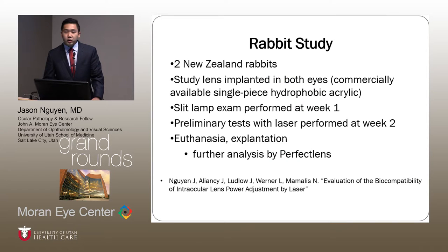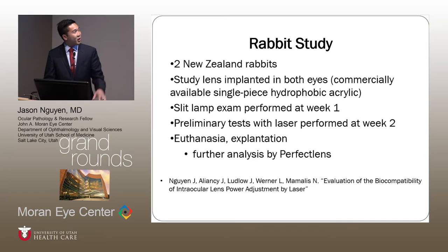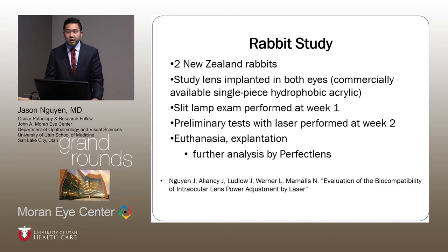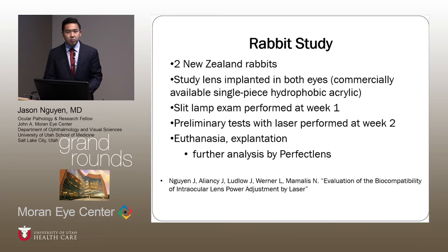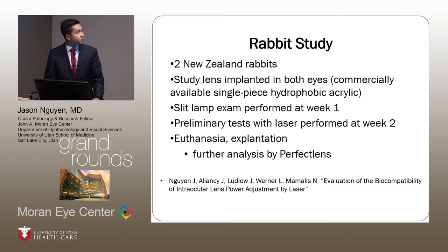To conclude, I wanted to talk about the rabbit study — the primary rabbit studies that we've been doing, our little patients. We started with two rabbits, implanted a hydrophobic acrylic lens — just commercially available — in both eyes, and performed a slit lamp examination; they were unremarkable at week one. The company came in and brought their laser and performed some preliminary tests to figure out their parameters. Afterward, we explanted the lens and sent it back to the company for further analysis.